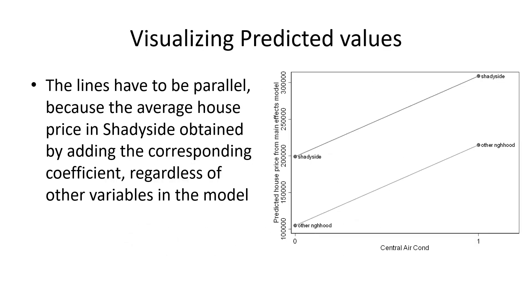The model, the two lines have to be parallel because we don't have an interaction in there. So if I go from zero to one here on central air conditioning, then I have from average price here that goes to a higher average price. And if I go from not having central air conditioning to central air conditioning and I am in Shadyside, that increase has to be the exact same one. Even though there are no intermediate values here, if you draw a line, they still have to be parallel.